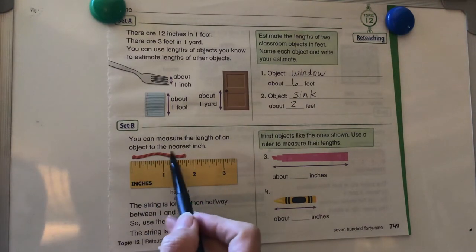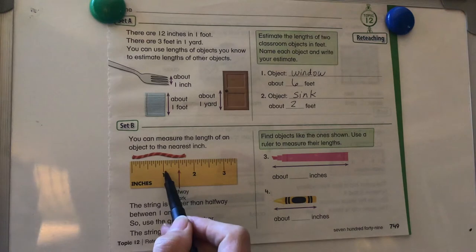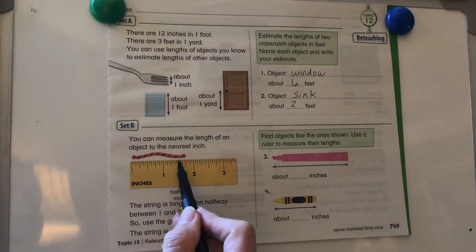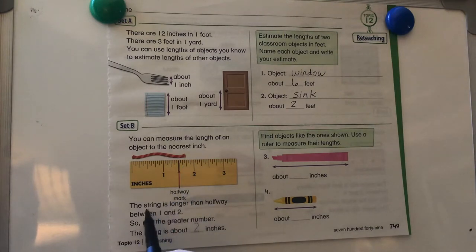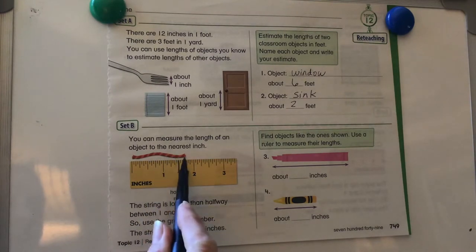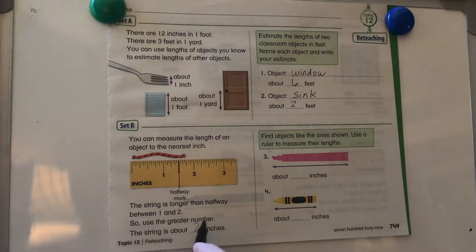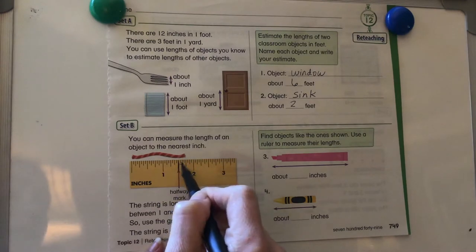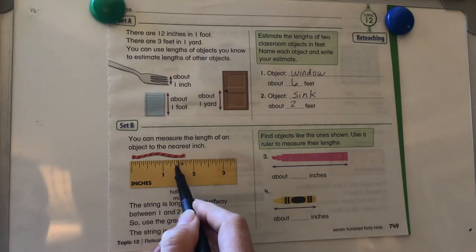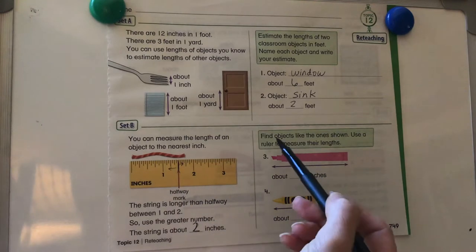You can measure the length of an object to the nearest inch. There's always a halfway mark. Halfway in between hangs down normally a little bit longer than the other ones. And what you do is the string is longer than the halfway mark between the one and the two, so use the greater number. The string is about two inches. So if it's past the halfway mark, we go to the next number. If it's less than the halfway mark, we go to the lower number.